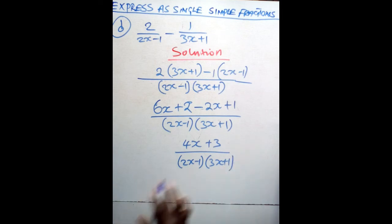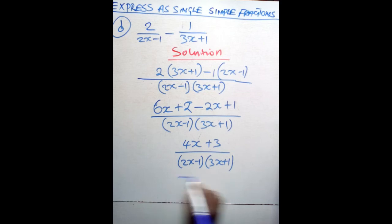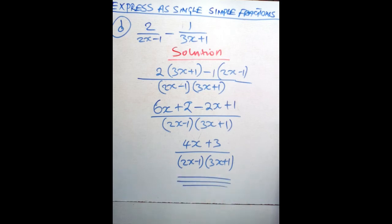From here, we do not have any common factors that can be divided through or anything to factorize. So the answer remains at this point.